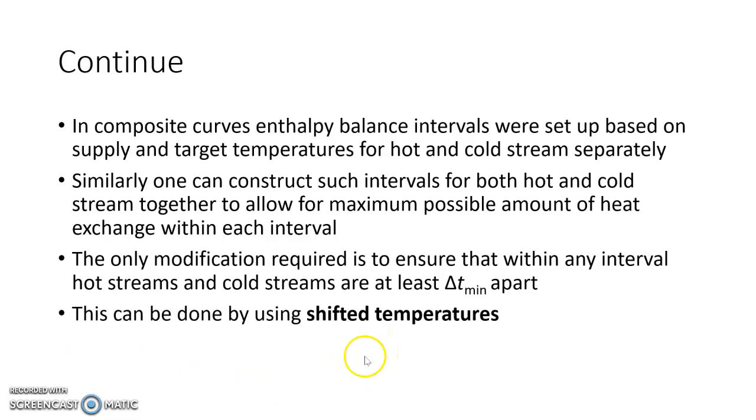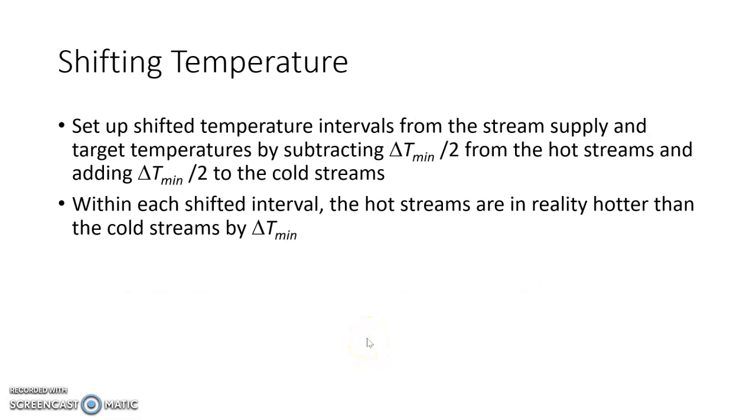We say that delta T minimum is 10 and accordingly we decide our further course of action. So we need to make a shifting of the temperature. How do we shift the temperature? For shifting the temperature, we have to do delta T minimum by 2, subtract it from the supply and target temperature from hot stream making them colder, and add delta T minimum by 2 to cold stream making them hotter. So for every interval, the shifted temperature will make sure that hot streams are really hotter than the cold stream by minimum delta T. So within each shifted interval, the hot streams are in reality hotter than the cold stream by delta T minimum.